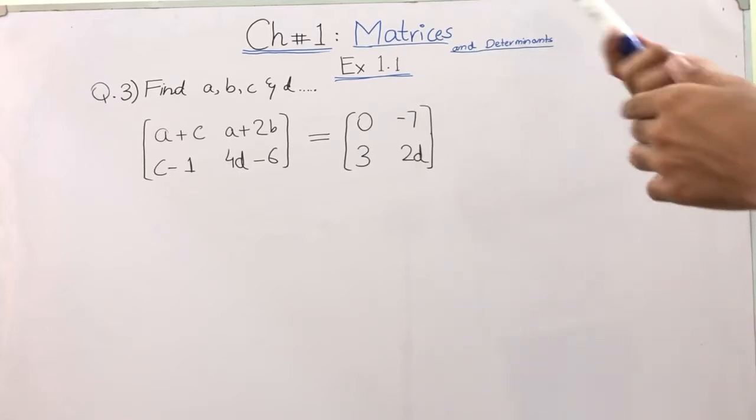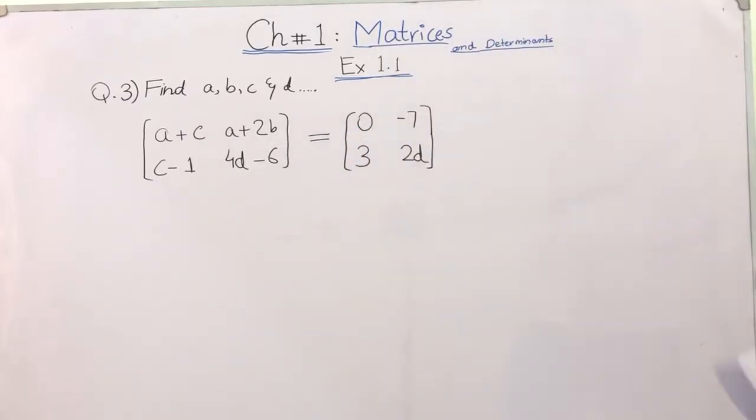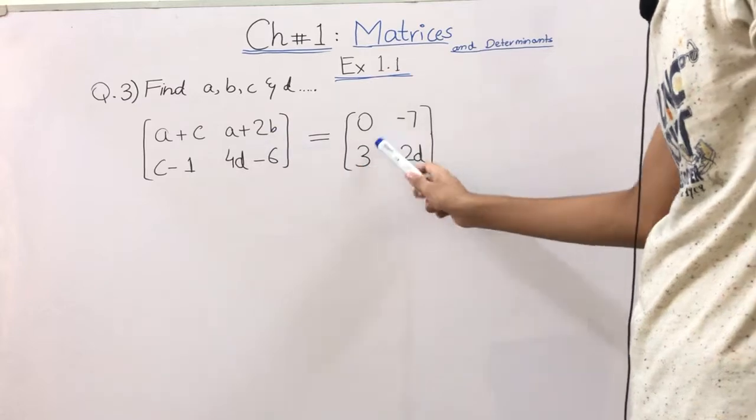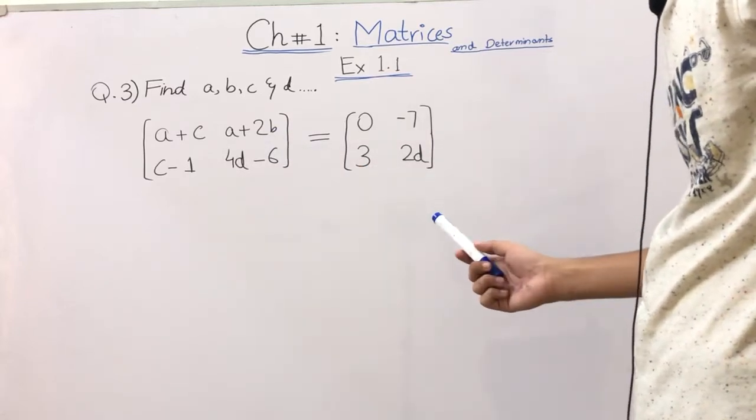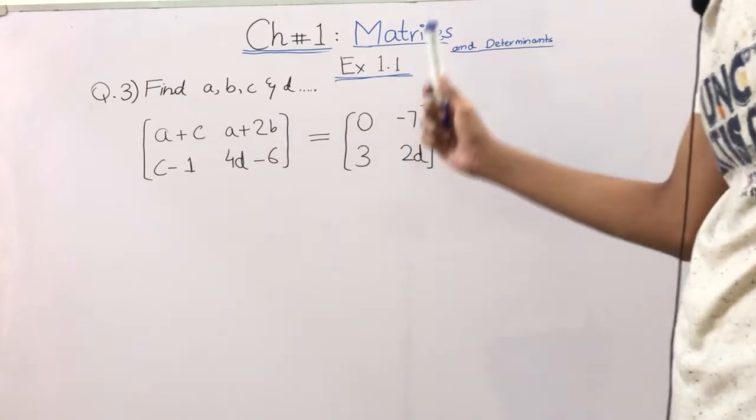We will find A, B, C, and D. So equality of matrices - this is an equal matrix. If it is an equal matrix, then we look at that the order is the same and the corresponding entries will be equal.